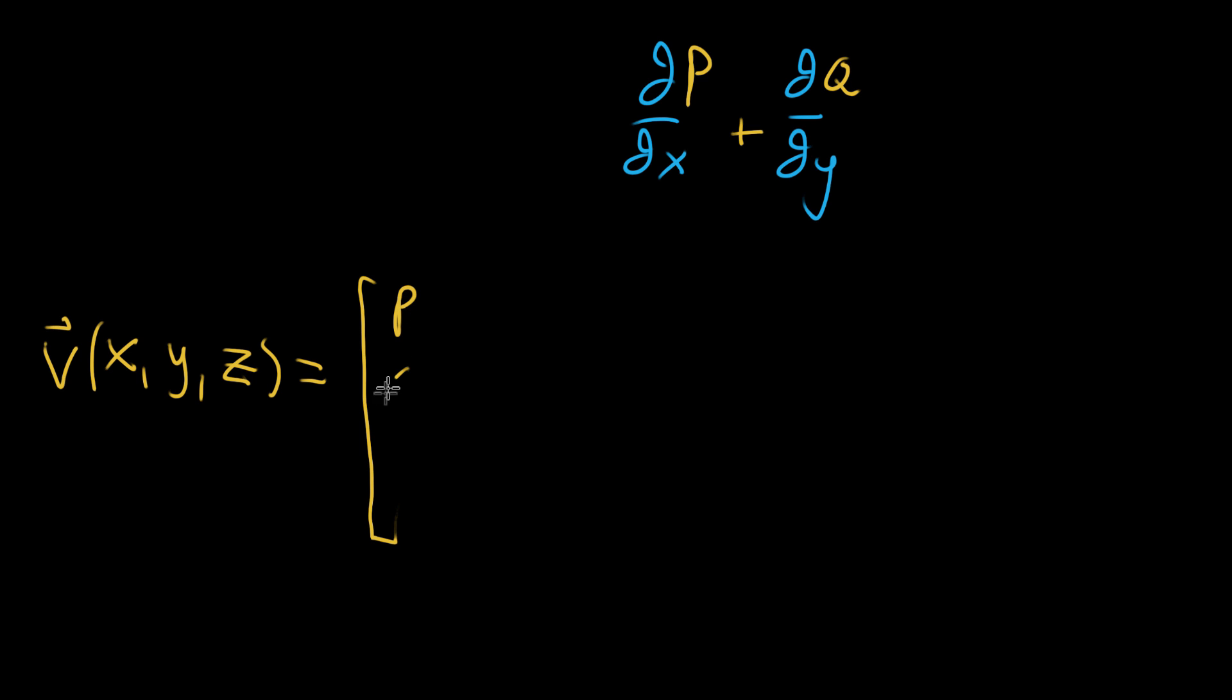So it might be like p, q, and r, and all of these are functions of x, y, and z. So that's p of x, y, and z, q of x, y, and z, and then r of x, y, and z.